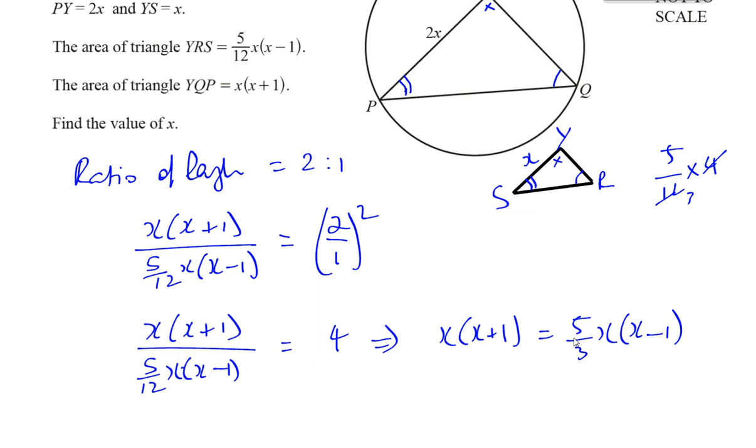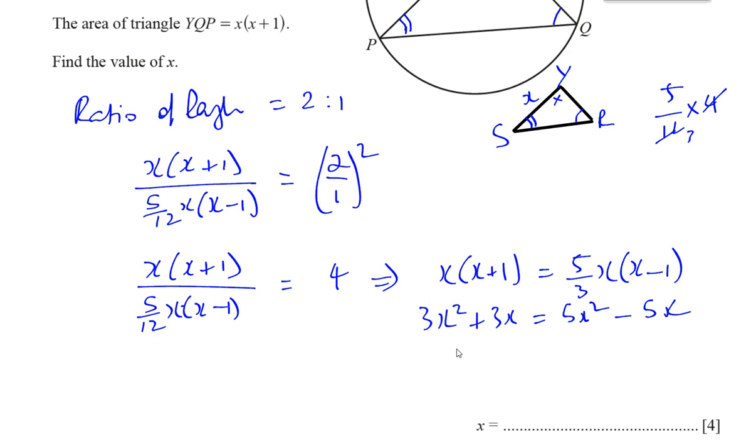If I multiply both sides by 3, I have 3x² + 3x equals 5x² - 5x. Now I can bring the x² terms to one side. I'll bring everything to one side to get a quadratic equation: 5x² - 3x² - 5x - 3x = 0, which gives 2x² - 8x = 0, which is the same as x² - 4x = 0.